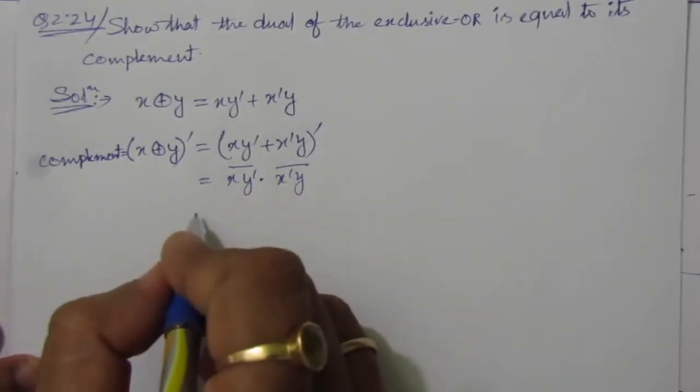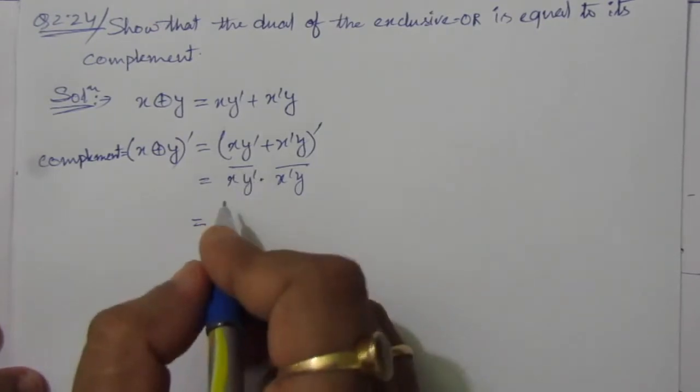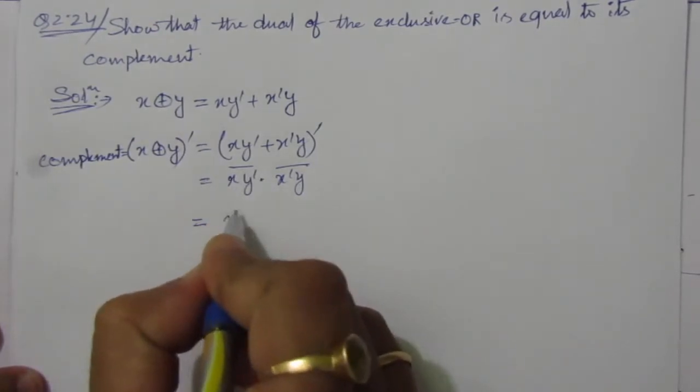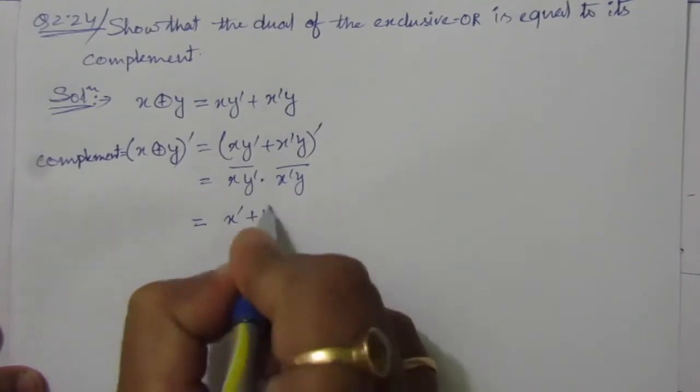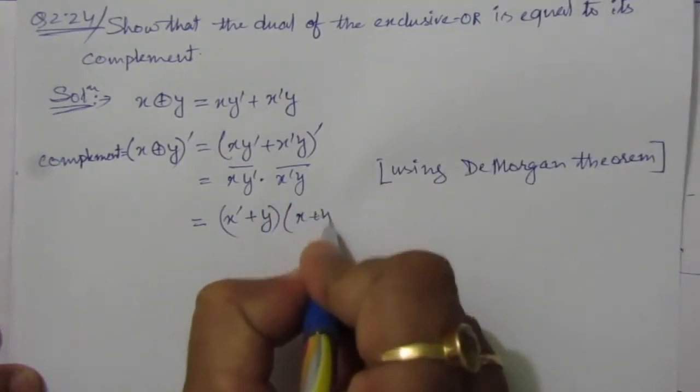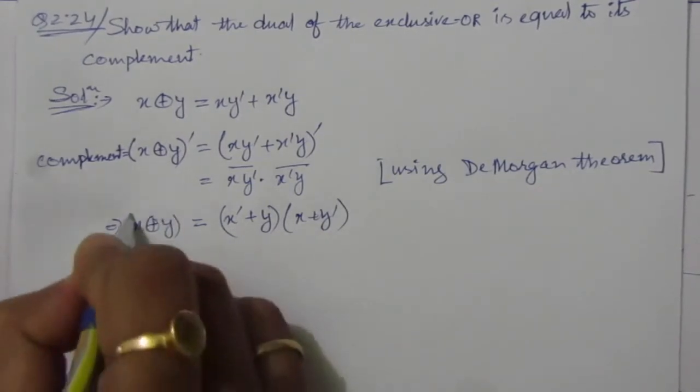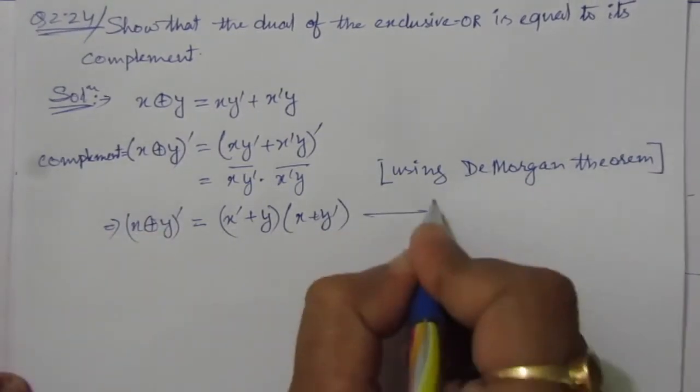We can again expand this. If we break this complement, then we will get x bar plus y, the whole into x plus y bar. So we can see that x XOR y complement is this one, so we number it as 1.